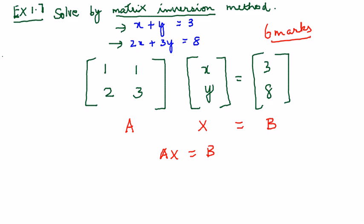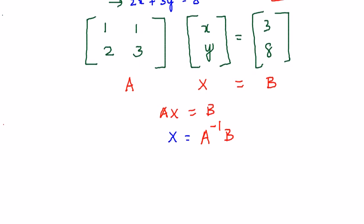Now I have to find out X, that is x and y here. So X will be equal to, when A goes to this side it will become A inverse B. So this is what we have to do. This is matrix inversion method. X equals A inverse B.